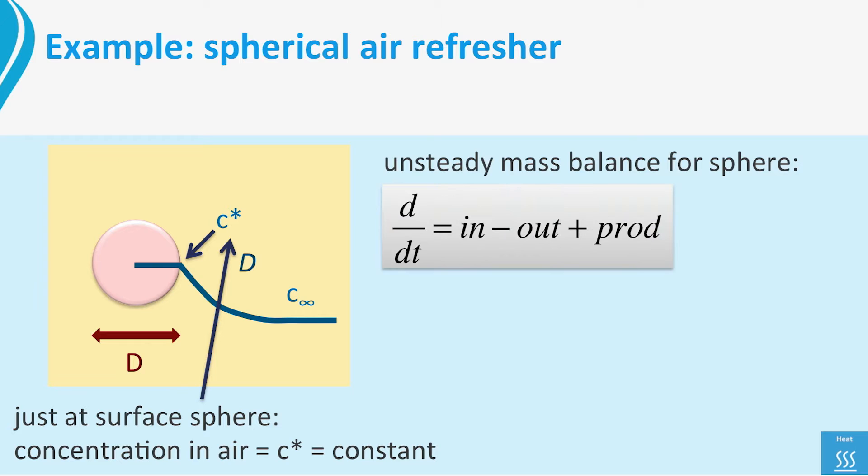To analyze how fast the sphere is shrinking, we will set up an unsteady mass balance with as control volume the entire sphere. The general form of the balance is like always d dt equals in minus out plus production. Like with the heat balance for the cooling sphere, we go over this equation term by term. The mass of the sphere can be written as volume times the density of the sphere. This mass is not a constant. The sphere loses mass due to evaporation.